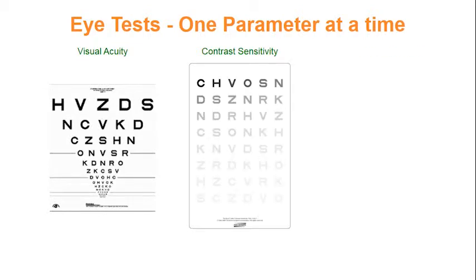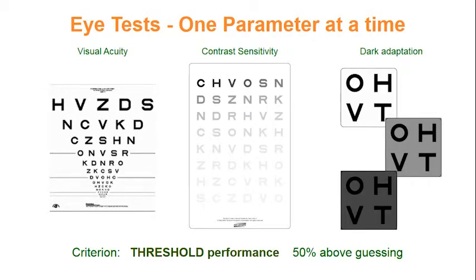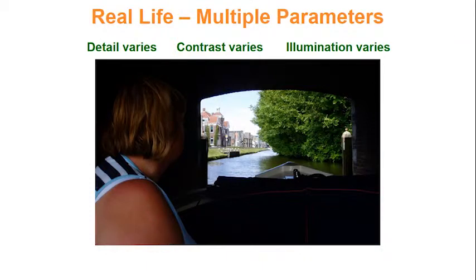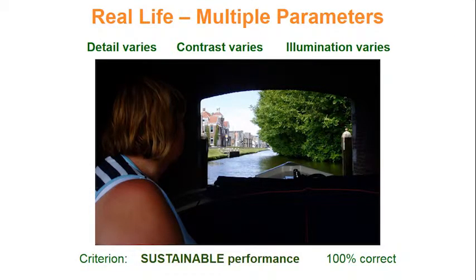Here are three familiar eye tests which measure different parameters: visual acuity, contrast sensitivity, and dark adaptation. Since we use separate tests, we may think of them as separate unrelated parameters. They each determine a separate performance threshold, which is defined as 50% above guessing. Real life situations, however, always involve multiple parameters — the detail varies, as does contrast, as does illumination. So we cannot get away with measuring one parameter at a time.